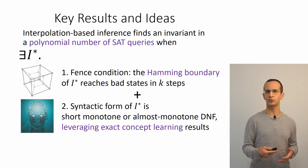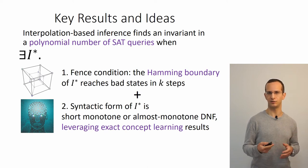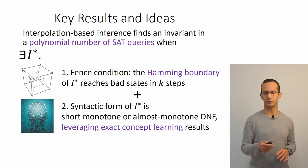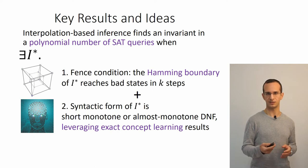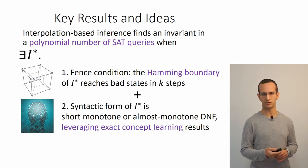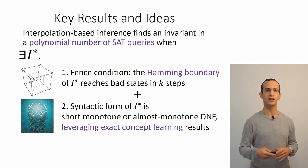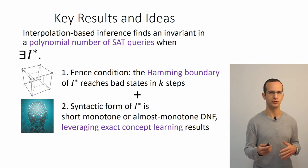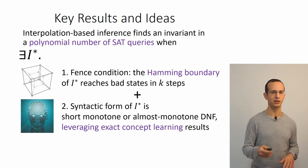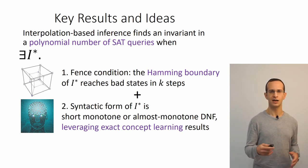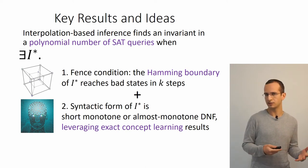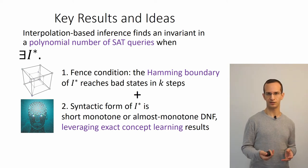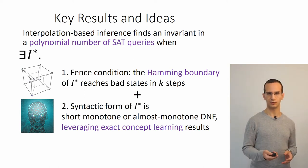That invariant also needs a syntactic form that matches results in exact learning theory. Specifically, if it's a monotone DNF invariant with no negated variables, the algorithm successfully infers it in a polynomial number of SAT calls. Or if it's an almost monotone DNF formula—where almost all the terms are monotone—then a different yet related algorithm can probably infer an invariant in a polynomial number of SAT calls.